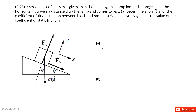Welcome to my channel. I am Zhang Jingxu. Let's look at problem 25 in chapter 5. In this one, you can see the object sits on a slope and it moves up with an initial velocity V0, then stops. We need to determine the coefficient for kinetic friction and the coefficient for static friction.